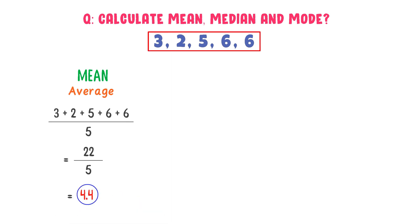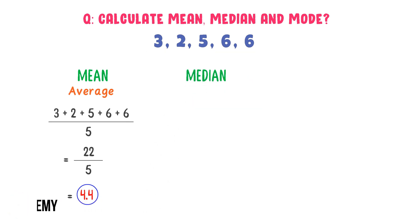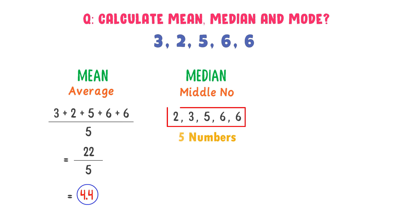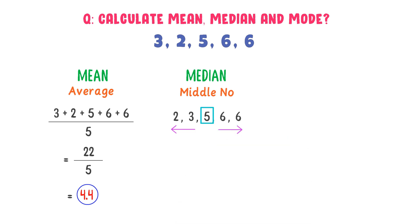So the mean or average number of this data set is 4.4. Now what about median? We know that median is the middle number. Write all these numbers in ascending order: 2, 3, 5, 6, 6. There are 5 numbers present in this data set. 5 is an odd number, and we know that median is the middle number. So in this data set, 5 is the median, because there are 2 numbers on the left side of 5 and 2 numbers on the right side of 5. So 5 is the middle number — the median of this data set.